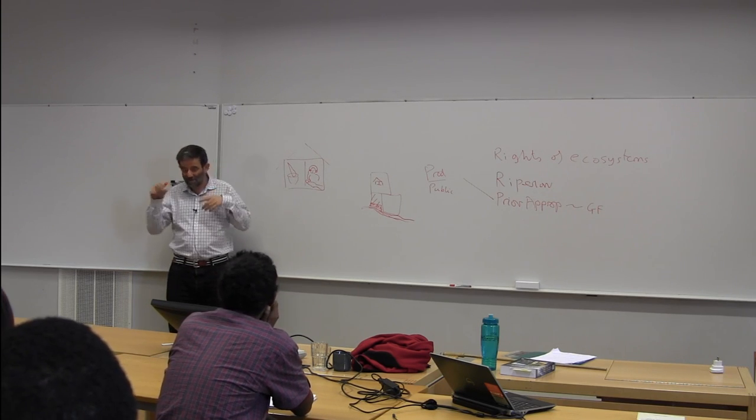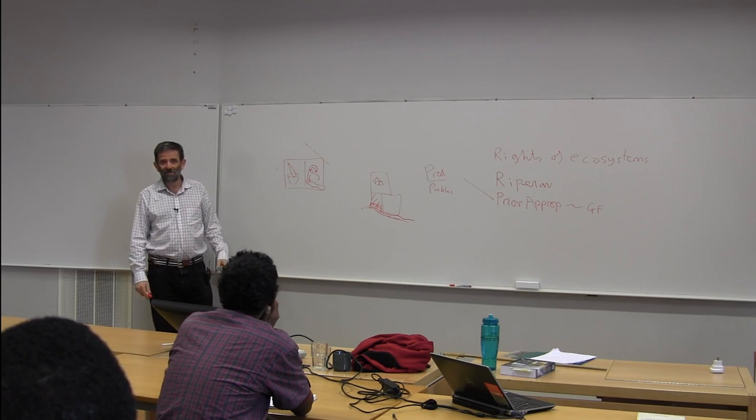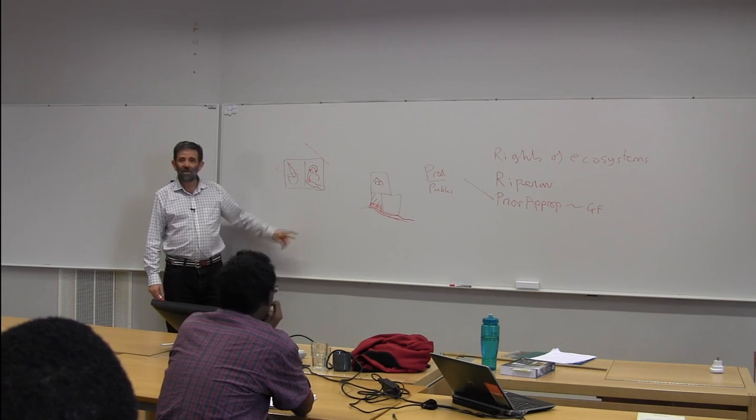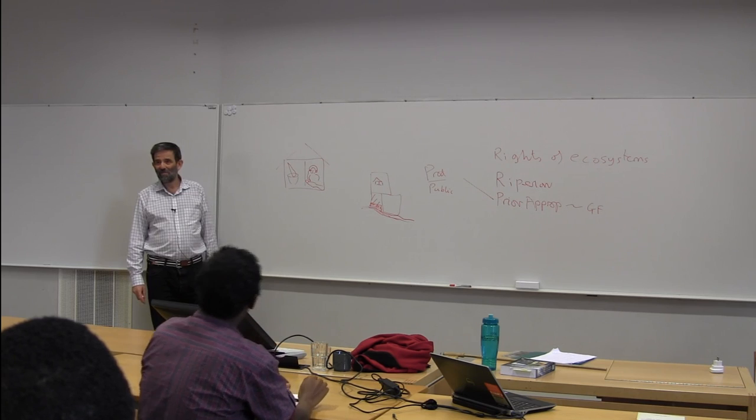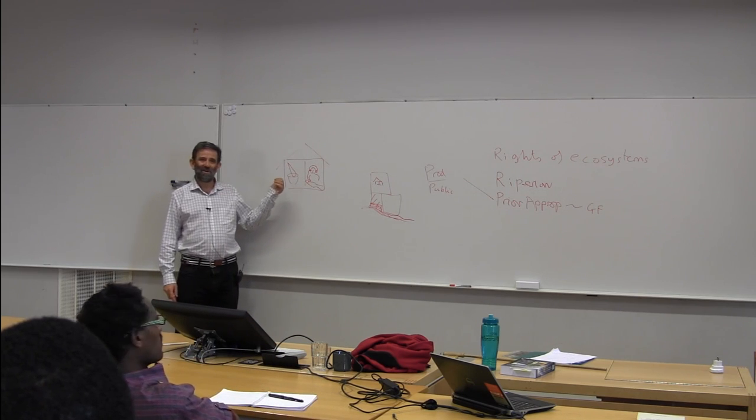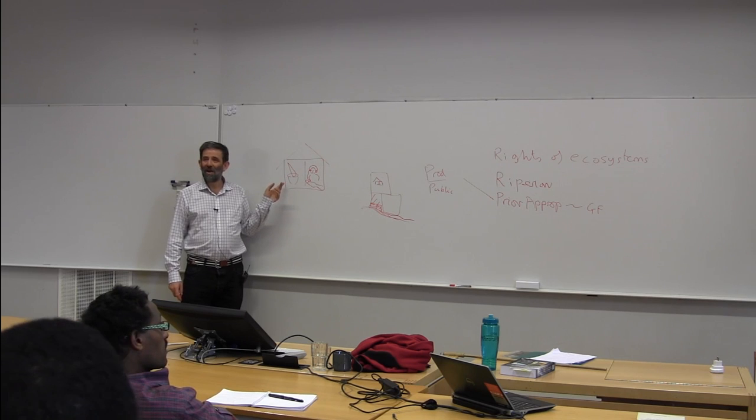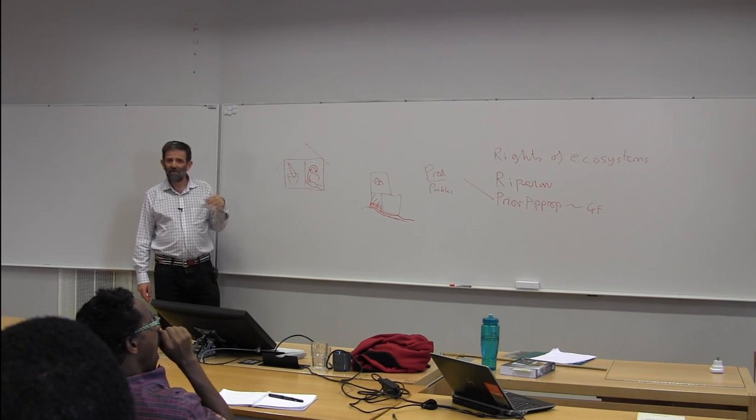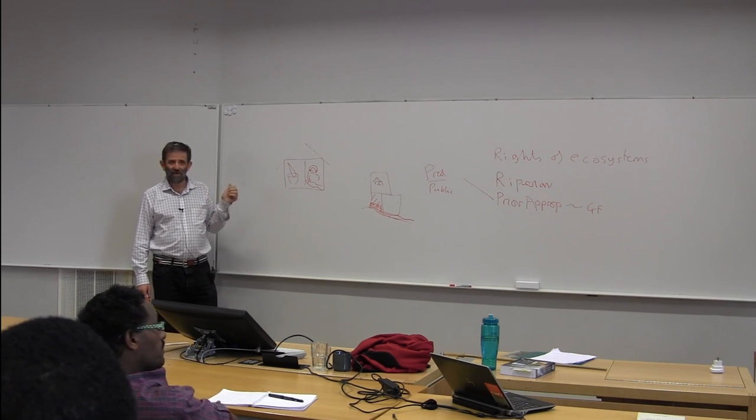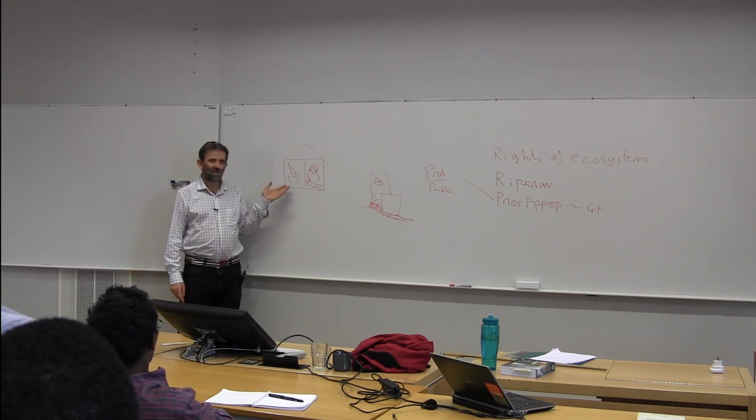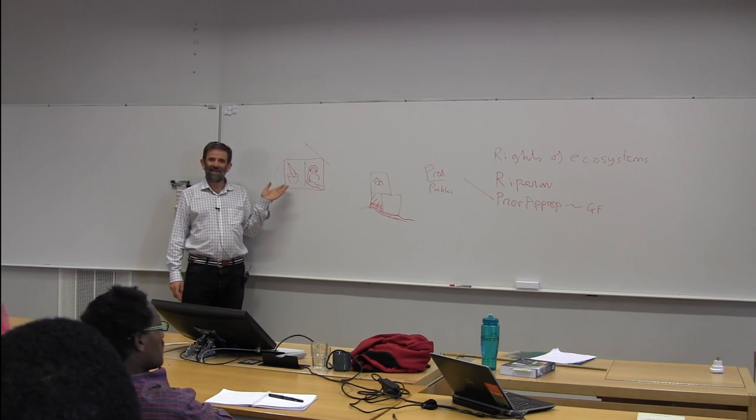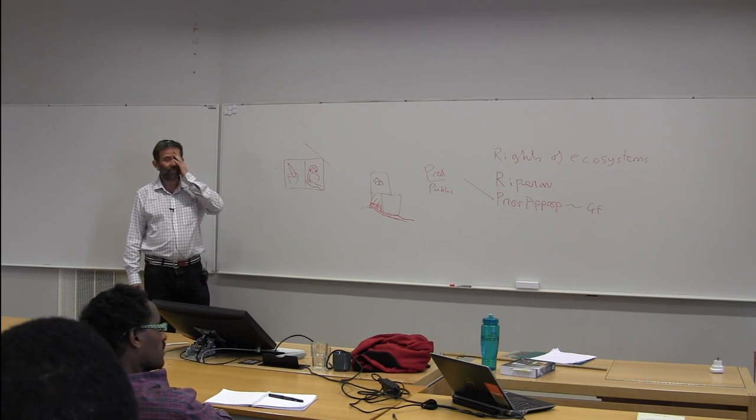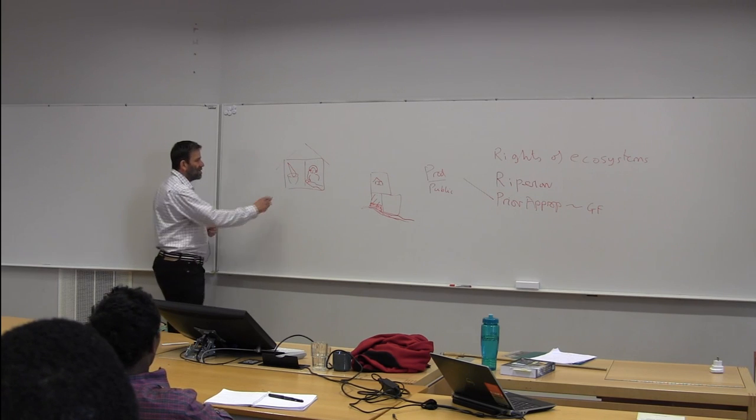And there's this famous case that Coase writes a lot about, see, exactly. You have here, you have the case of this, this Sturges versus Bridgman. I've forgotten who's who, but let's say it was Bridgman was the confectioner. A confectioner is a guy who makes sweets. And apparently to make sweets you had to pound sugar. Sugar came in big, like cones originally, and you had to pound them. And so this guy, Bridgman, owned the house and he produced sweets and the sweet making made a noise.